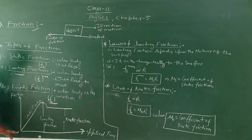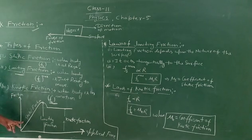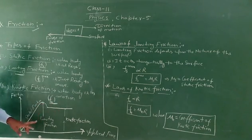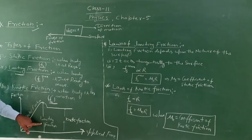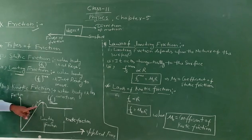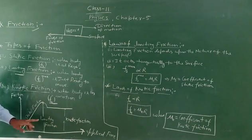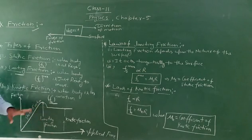When the body is at rest, the force is static friction. When the body is just ready to move, the friction force is known as limiting friction, and limiting friction is the maximum value of static friction. After limiting friction, when the body starts to move, limiting friction changes into kinetic friction, and kinetic friction is less than limiting friction.